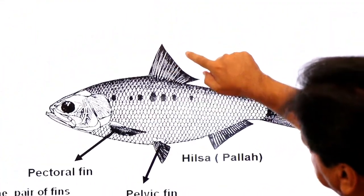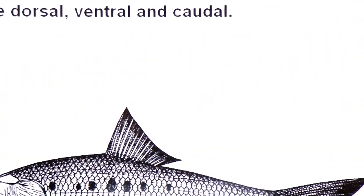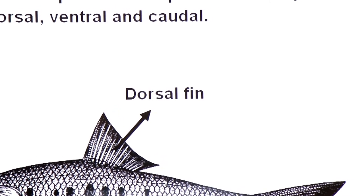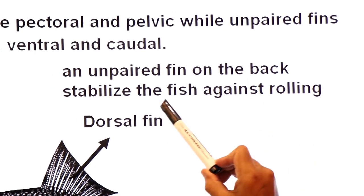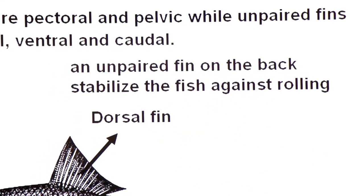And look at here, this is unpaired dorsal fin. This fin stabilizes the fish. An unpaired fin on the back stabilizes the fish against rolling.